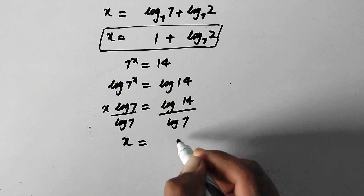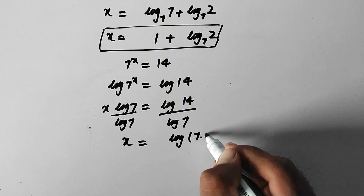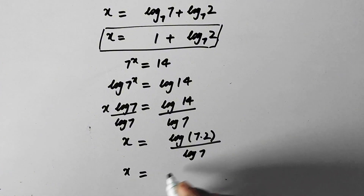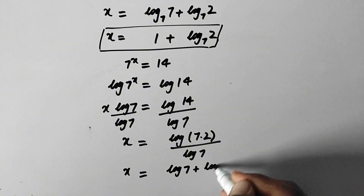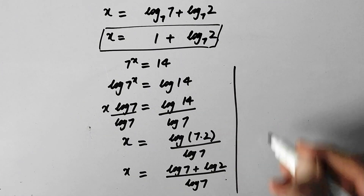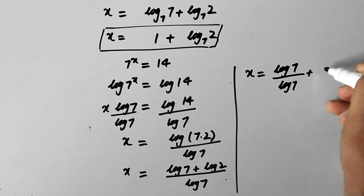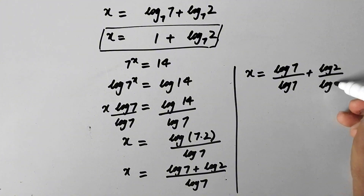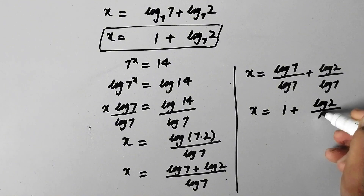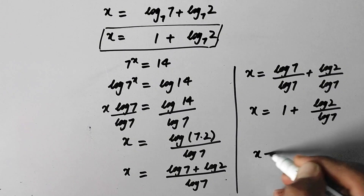So now x will be equal to log of 14 over log of 7. Since 14 can be split as 7 times 2, we get x equal to log of 7 plus log of 2, all over log of 7. This simplifies to x equal to log of 7 over log of 7 plus log of 2 over log of 7, which gives x equal to 1 plus log of 2 over log of 7.